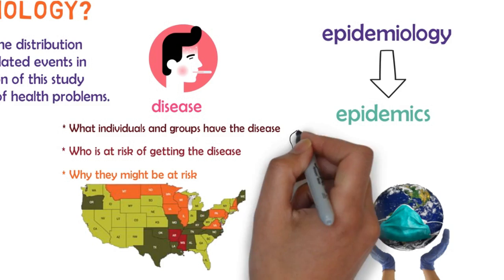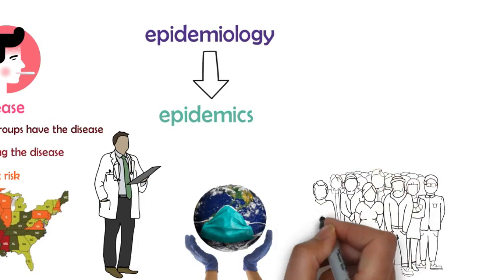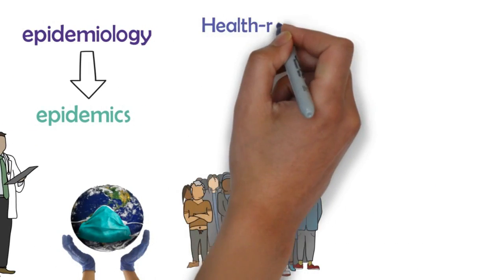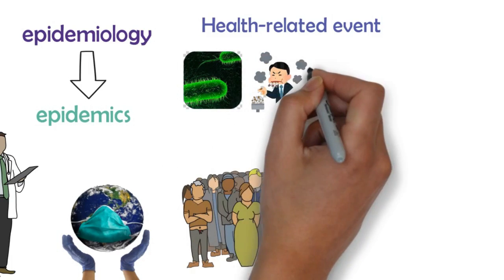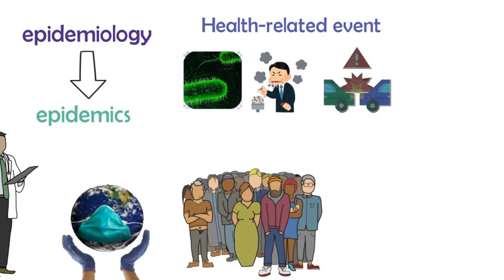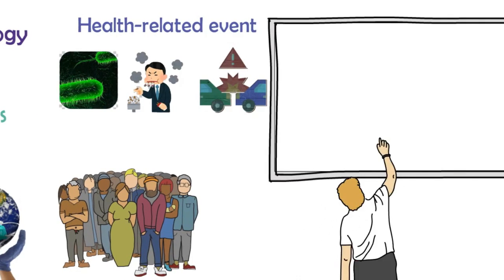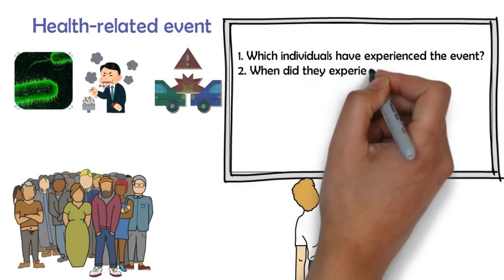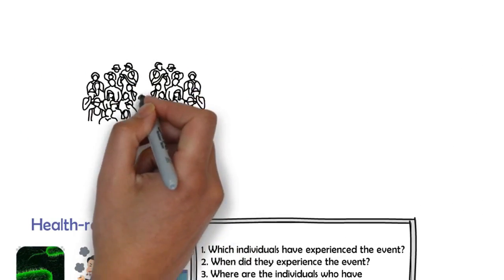Although the word epidemiology sounds an awful lot like epidemics, epidemiology is not solely concerned with epidemics. All health-related events are of interest to epidemiologists, and the principles of epidemiology are applied all across the board. When the term health-related event is used, it may refer to a contagious disease, an environmental situation that is dangerous to health, or even an accidental injury. Epidemiologists are typically concerned with: which individuals have experienced the event, when did they experience the event, and where are the individuals who experienced the event.